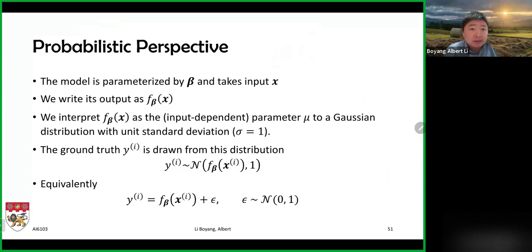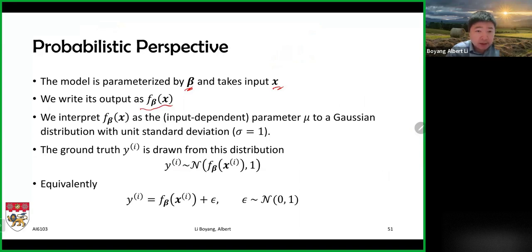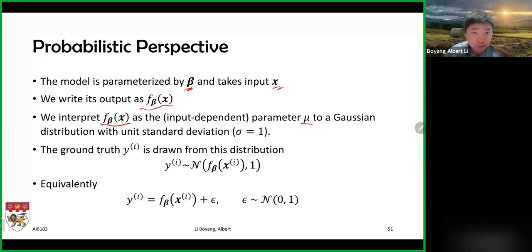We can also think about ridge regression and linear regression from a probabilistic perspective. We have a model parameterized by beta that takes input x. We can interpret the function value as the parameter mu of a Gaussian distribution with standard deviation one.